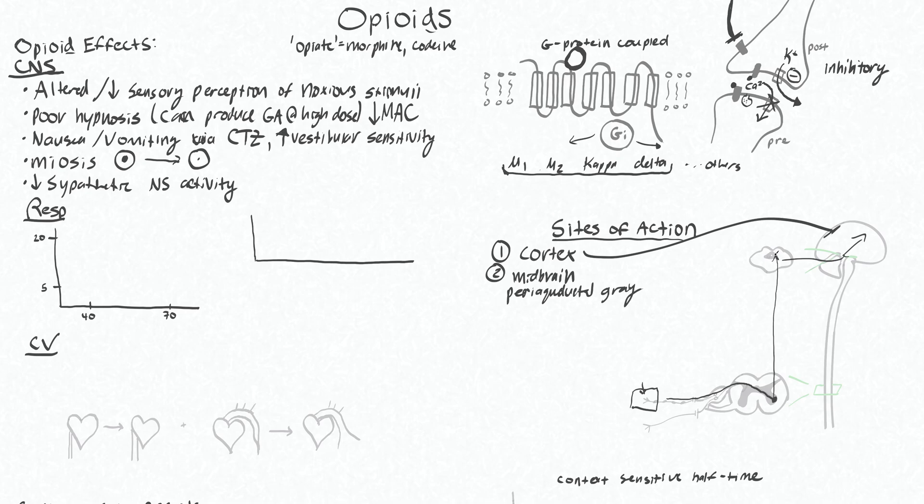So now this is the periaqueductal gray. This is an area just around the cerebral aqueduct in the midbrain. When nociceptive information reaches this area, it can send descending inhibitory pathways down to your dorsal horn in the spinal cord. I should draw maybe an inhibitory arrow here. There are opioid receptors in this area, so opioids can bind to the cells in the periaqueductal gray and cause descending inhibitory signals to go down to the dorsal horn where nociceptive information enters the spinal cord. Then there will be less relay of this information over to the ventral horn and less going up. So that is the periaqueductal gray.